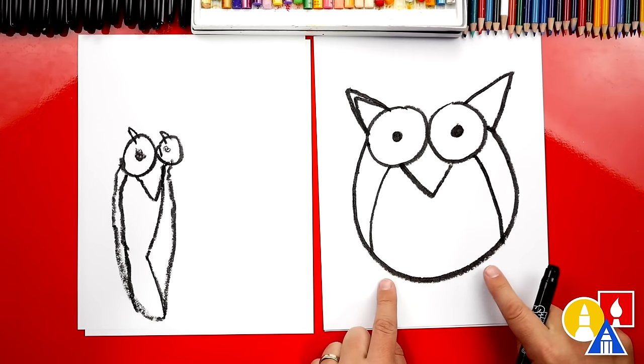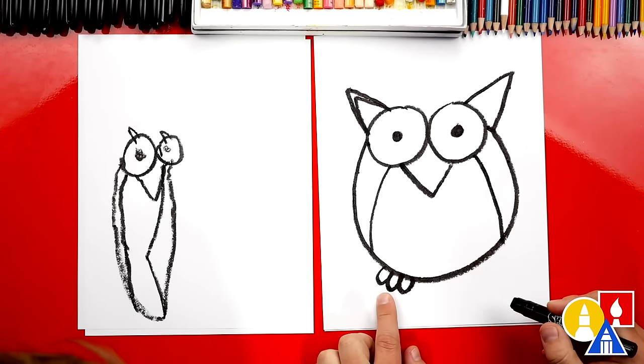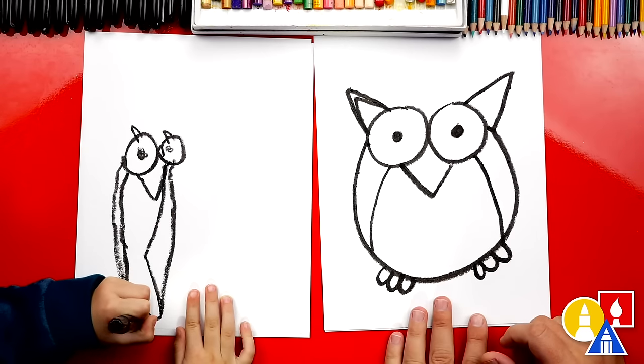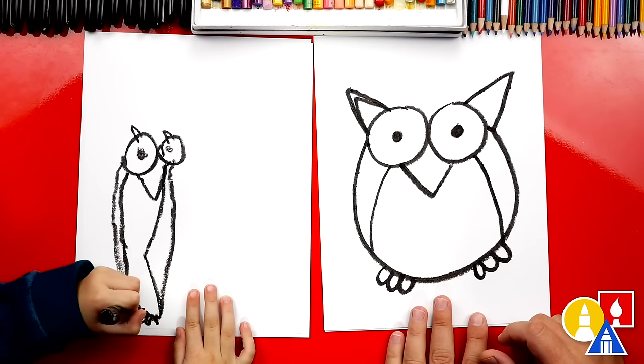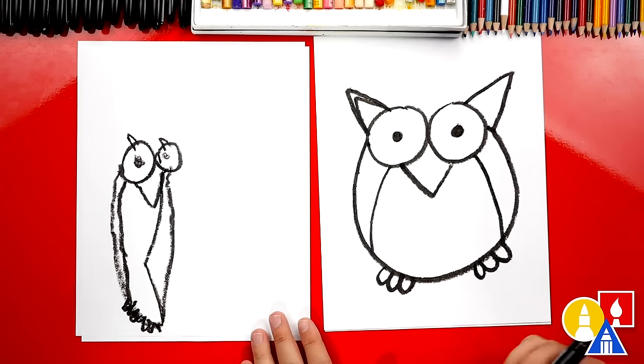What's our owl missing down here at the bottom? Feet. Yeah, feet. We're going to draw three little U's like that. And I'm going to draw three more over here. One, two, three. One, two, three. You got the feet. We did it.